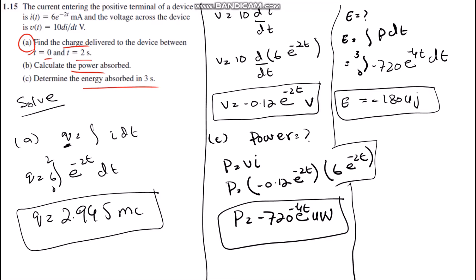We know that whenever the current is given, we have to integrate the current in order to find the charge. We have done the same thing — we simply integrated the current in order to find the charge between 0 to 2 seconds. We then calculated the value of the charge, which is 2.945 milliCoulombs.